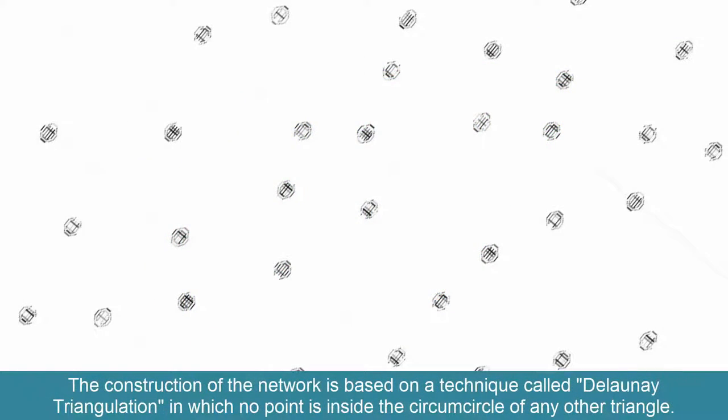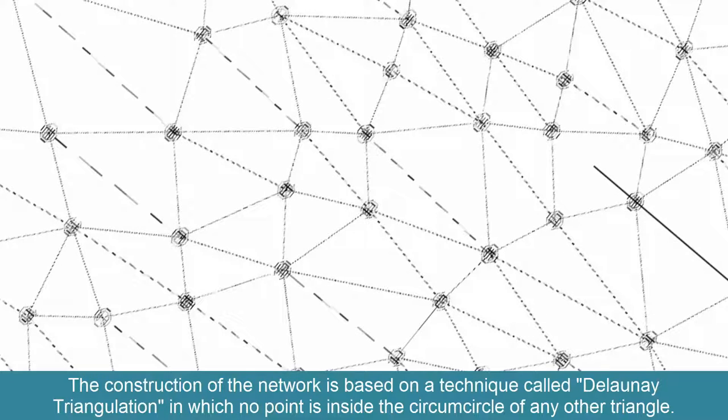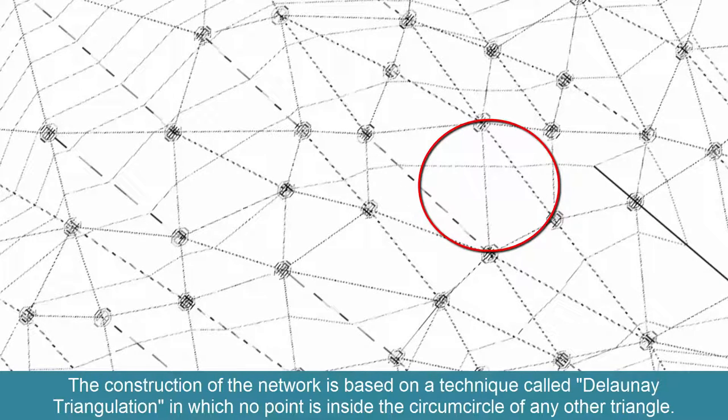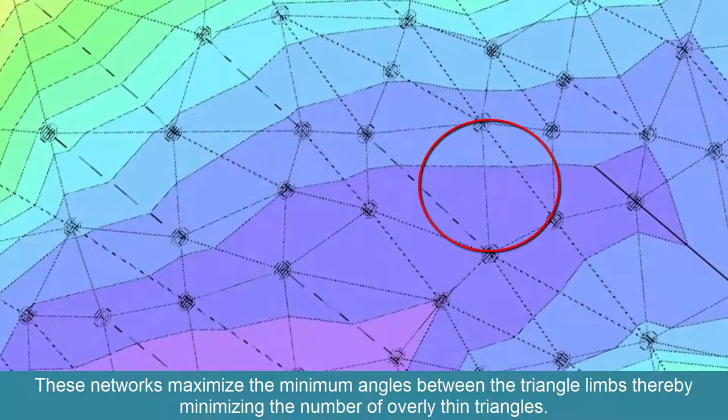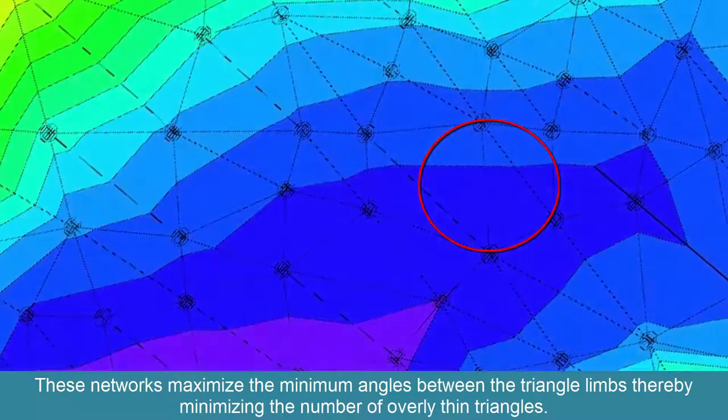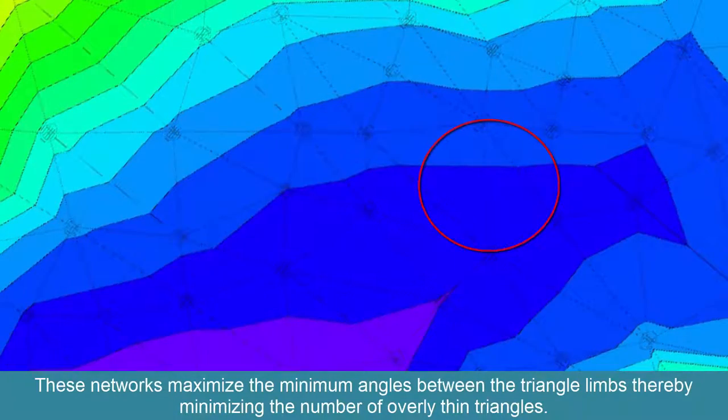The construction of the network is based on a technique called Delaunay triangulation, in which no point is inside the circumcircle of any other triangle. These networks maximize the minimum angles between the triangle limbs, thereby minimizing the number of overly thin triangles.